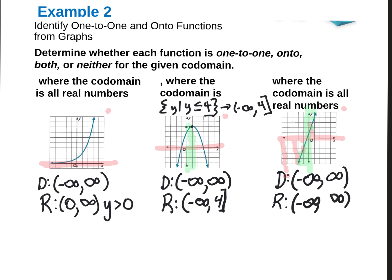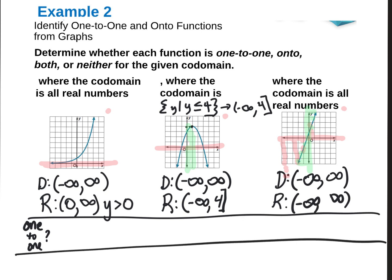Now let's decide if each is one-to-one and onto. One-to-one requires passing the horizontal line test. Letter A — the exponential — passes the horizontal line test, so yes, it is one-to-one. Letter B — the parabola — fails the horizontal line test, so no, it is not one-to-one. Letter C — the linear function — passes the horizontal line test, so yes, it is one-to-one.